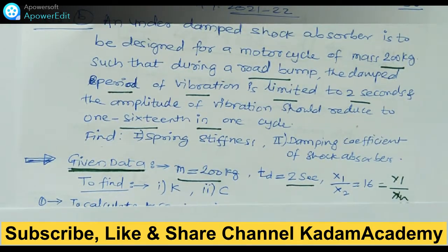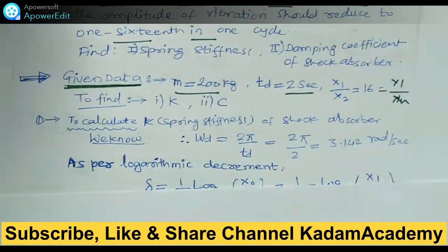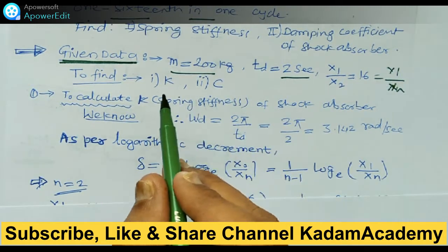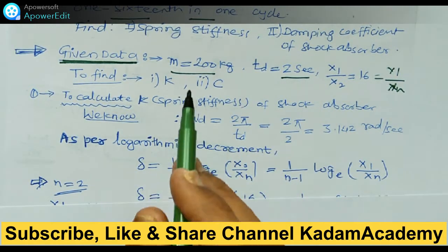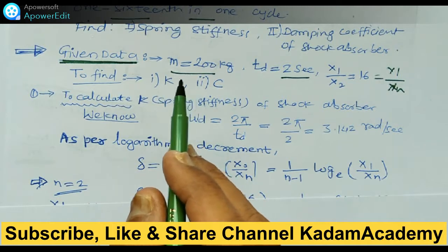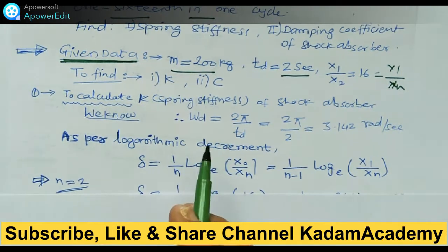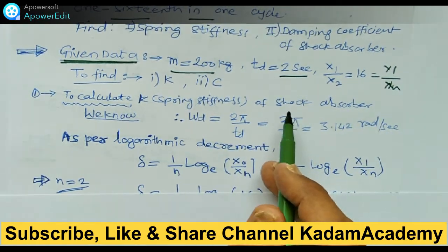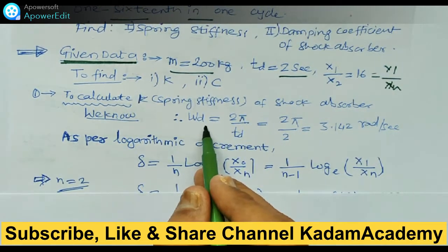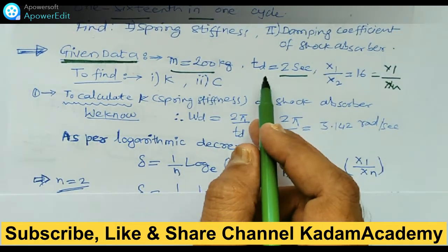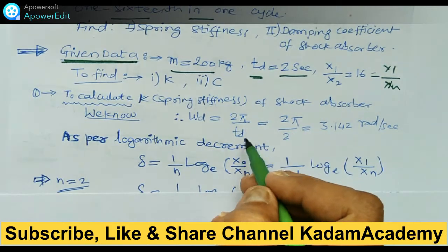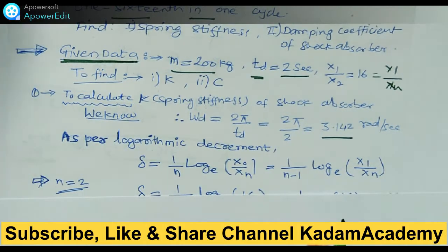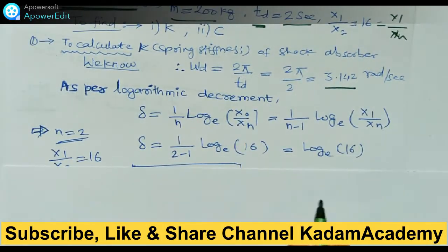To find k and c, we need to find the value of damping coefficient and spring stiffness. To calculate k for this shock absorber, first we have to find omega_d. Since we know Td, we can find omega_d = 2π/Td = 2π/2 = 3.142 rad/s.